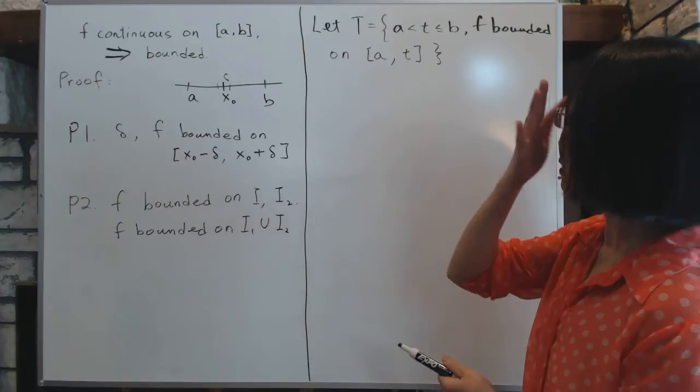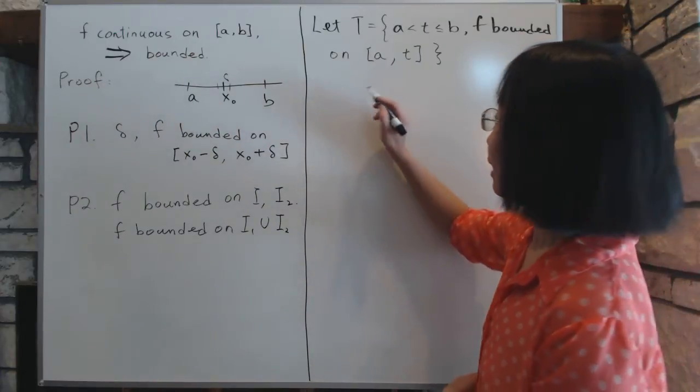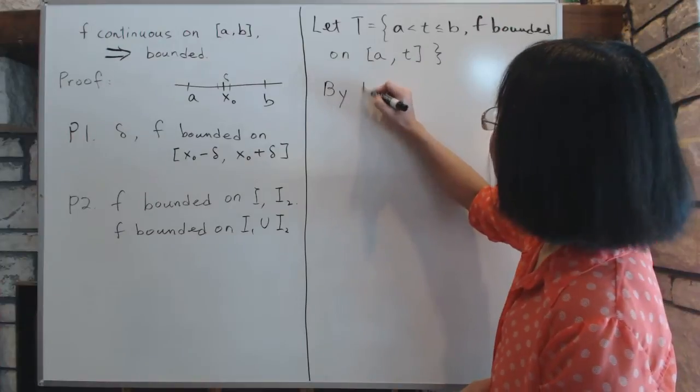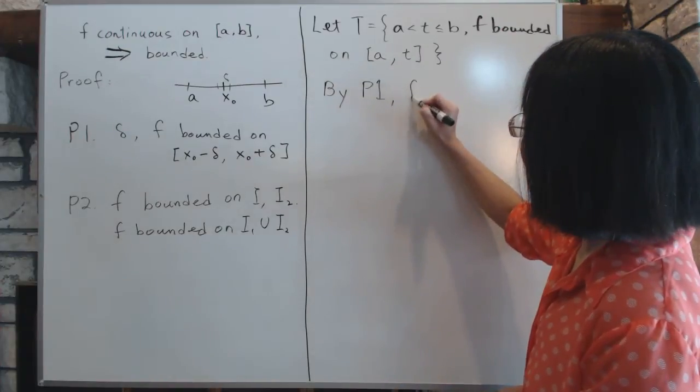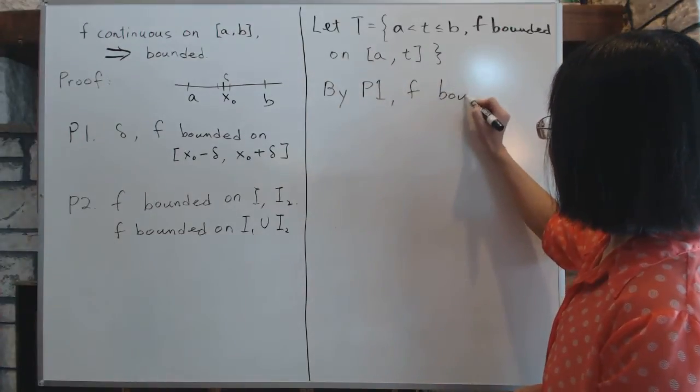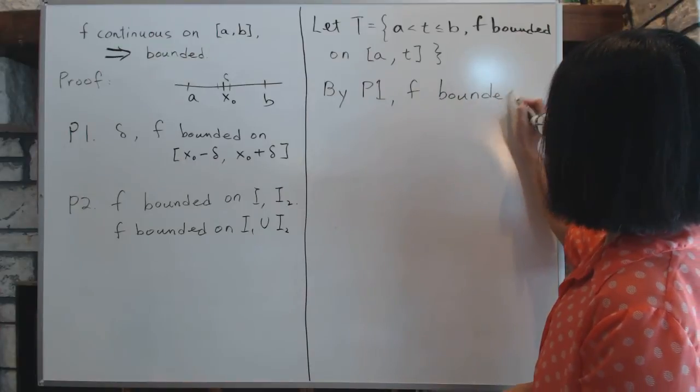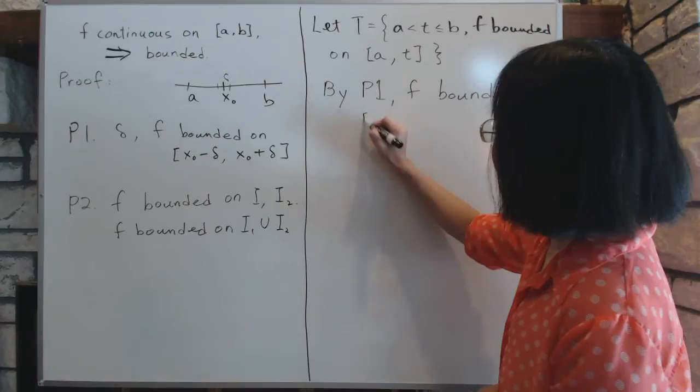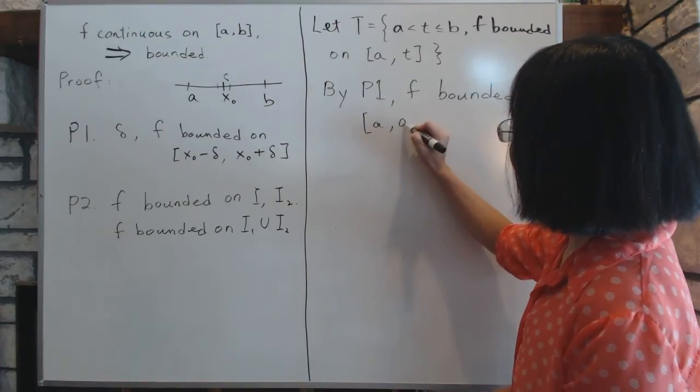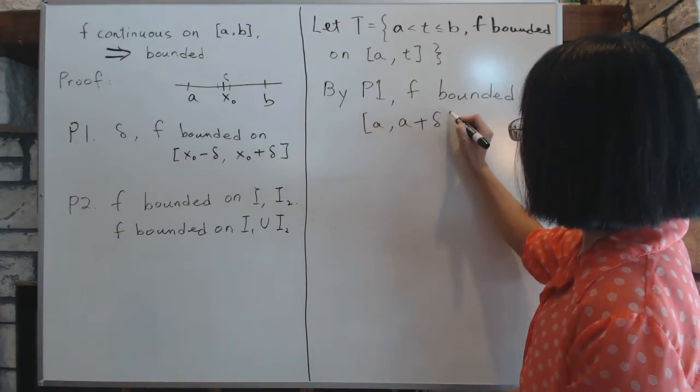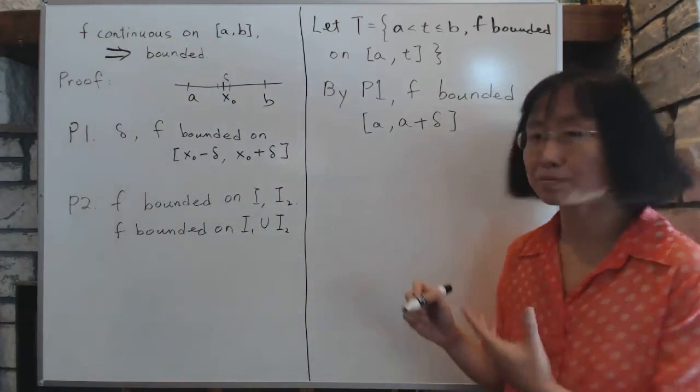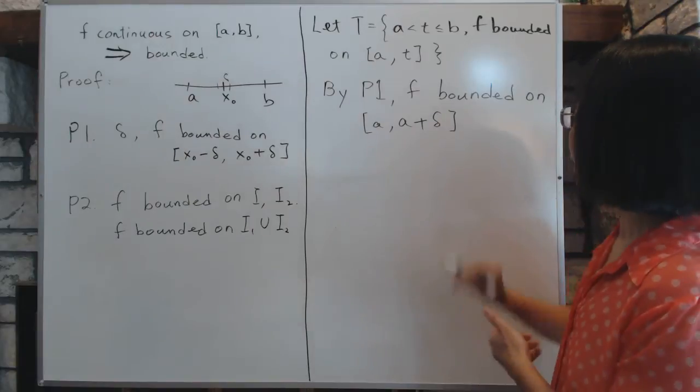Now by principle one, you consider number a. Now f is bounded by principle one. By principle one, f is bounded on a small interval going from a to a plus delta.